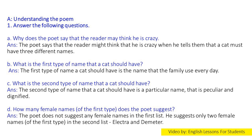A. Understanding the poem. 1. Answer the following questions. A. Why does the poet say that the reader may think he is crazy? Answer: The poet says that the reader might think he is crazy when he tells them that a cat must have three different names.